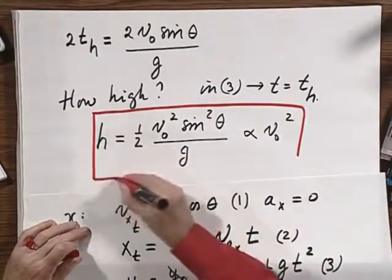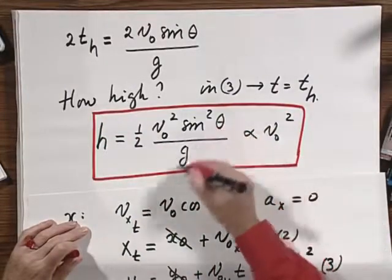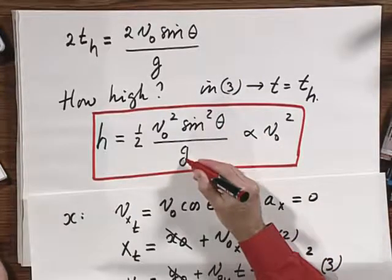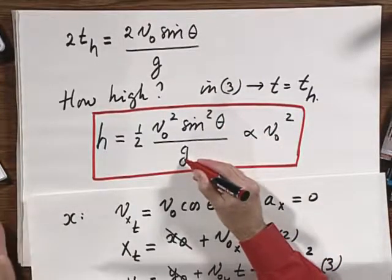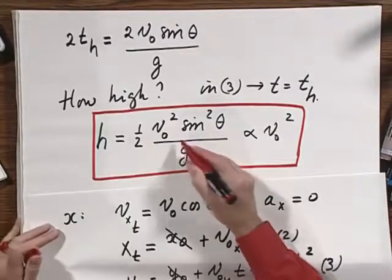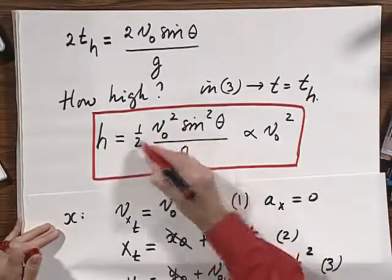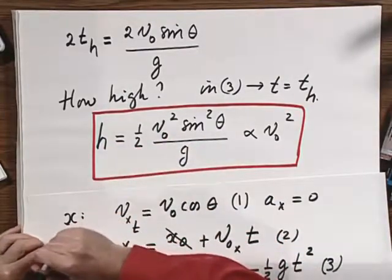And so you see here that when you double v0, all things being equal, and g on the moon is the same all the time, so you don't have to worry about g, notice that when you double v0, that it goes four times higher.